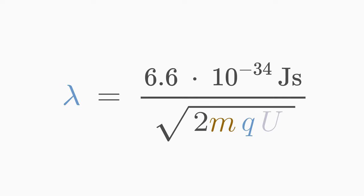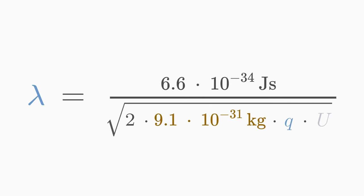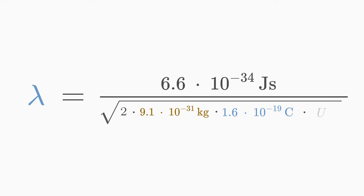If we use an electron with its corresponding mass and charge and set a voltage of 1000 volts, the de Broglie wavelength becomes 38.7 picometers. With a voltage of 1 volt, a de Broglie wavelength would be only 1.2 nanometers.